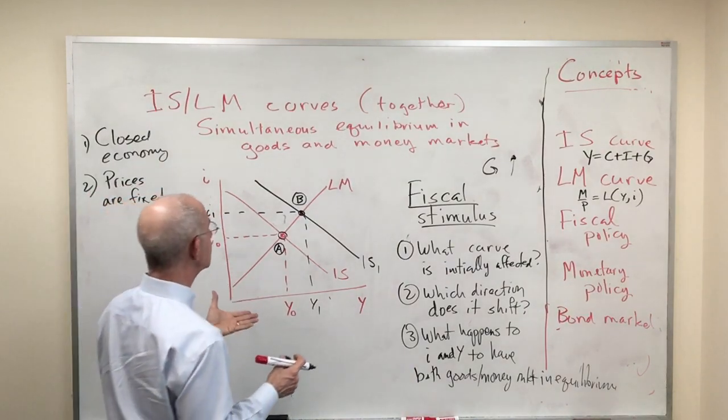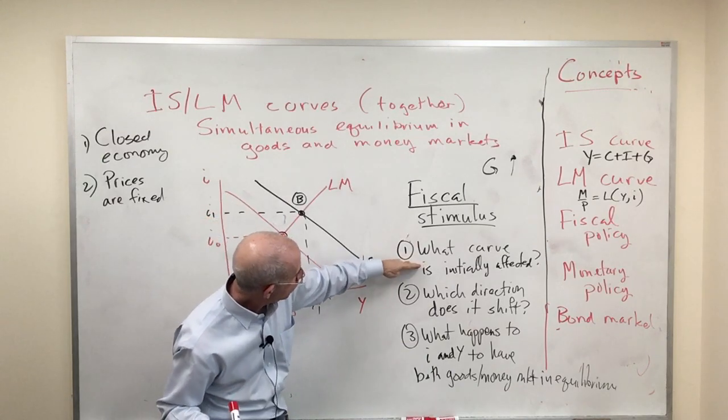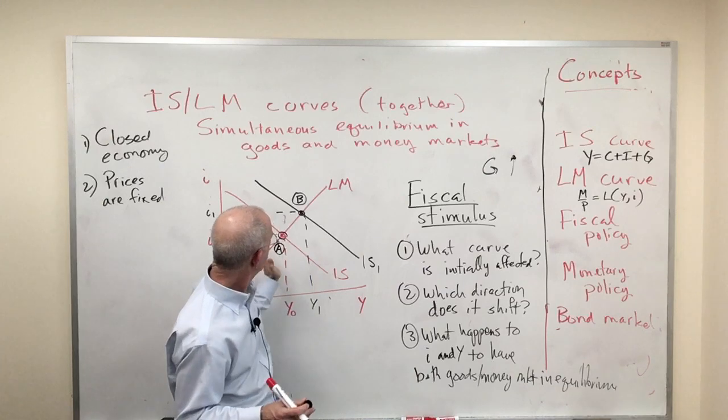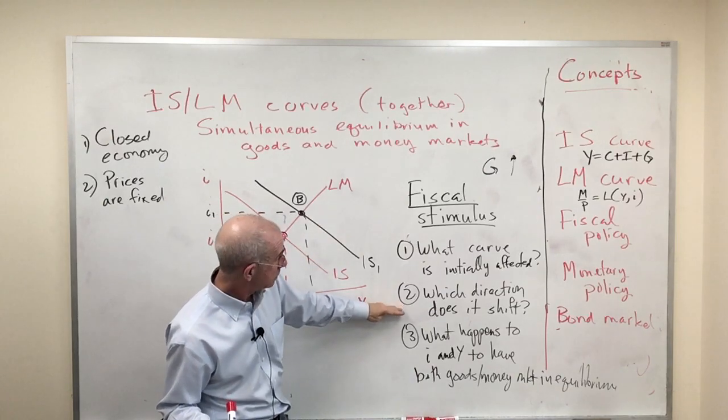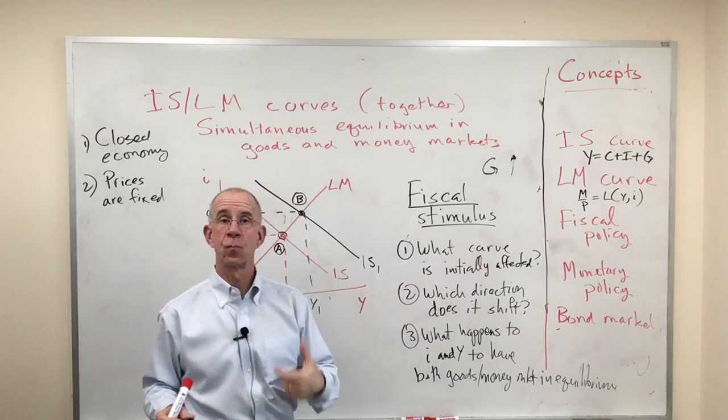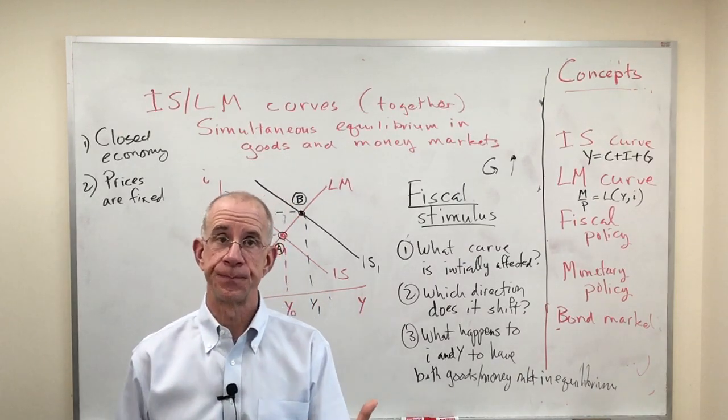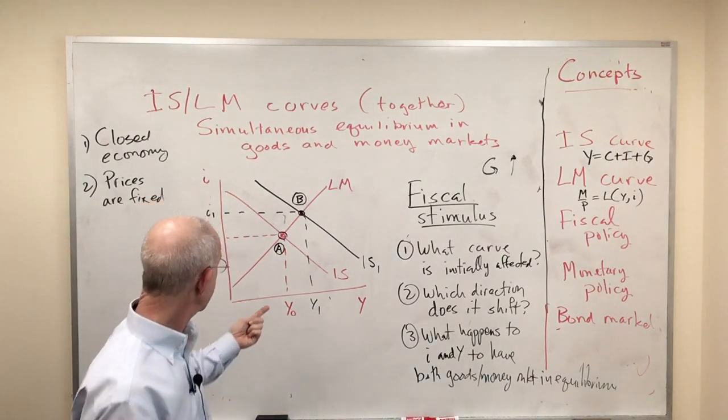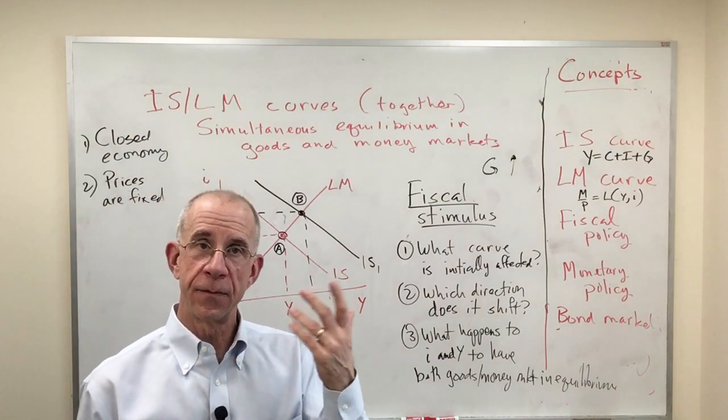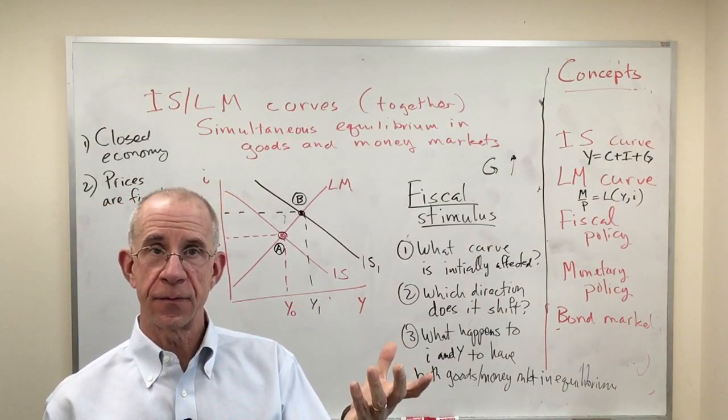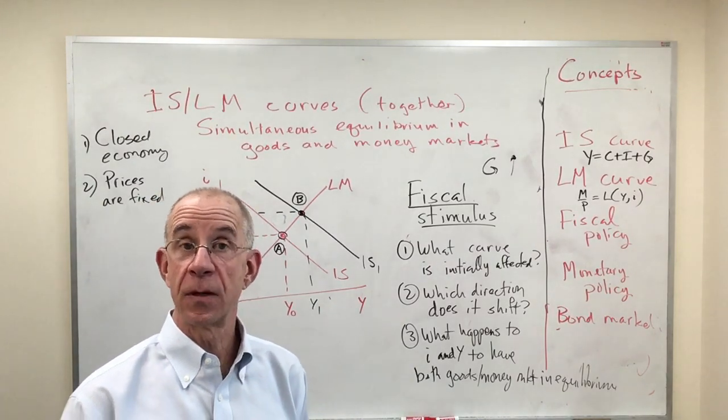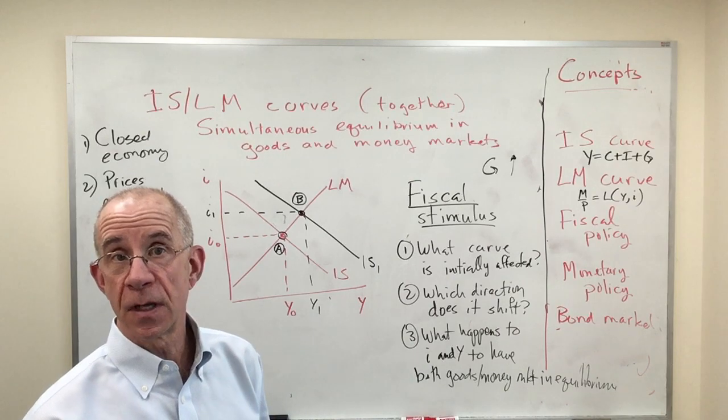So, what does a fiscal stimulus do? We figured out which curve was being initially affected. Shift of the IS curve to the right. Second part. What happens to interest rates and output? Well, with this new fiscal stimulus, we have an increase in output and we have higher interest rates, the crowding out effect.